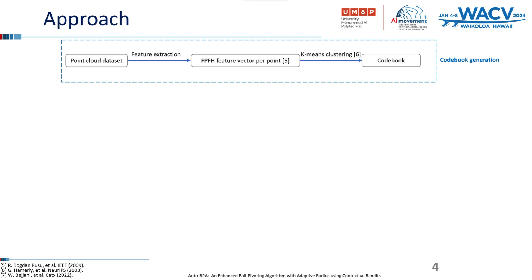The process is outlined through the subsequent stages. In the codebook generation step, we use the Fast Point Feature Histograms (FPFH) method to compute 33-dimensional feature vectors for each point in the point cloud dataset. After computing the feature vectors, we apply the k-means clustering algorithm to generate cluster centers in the feature space.